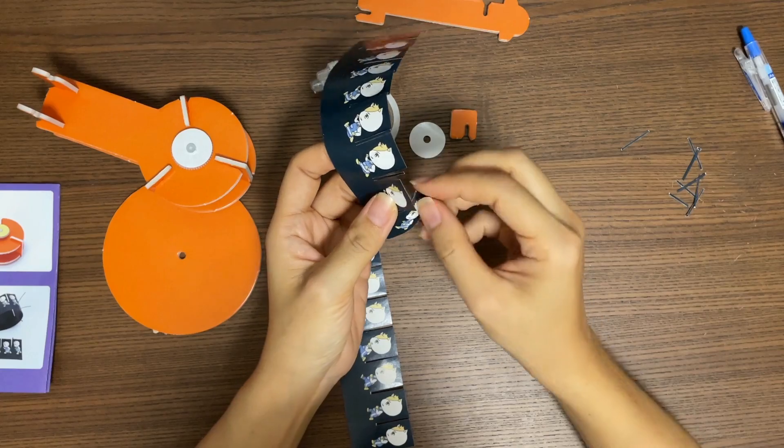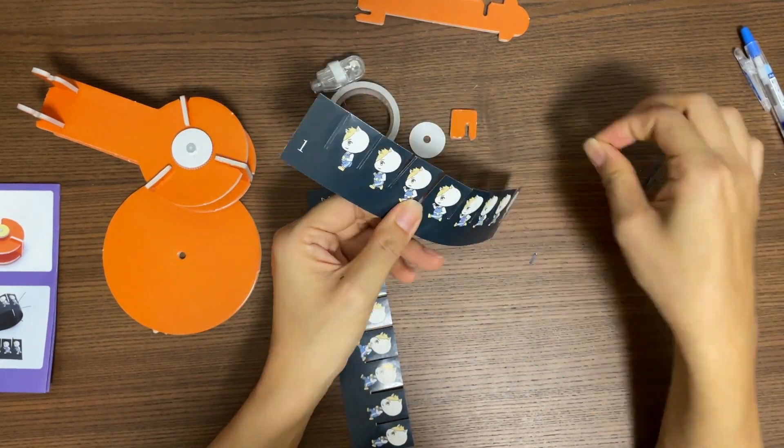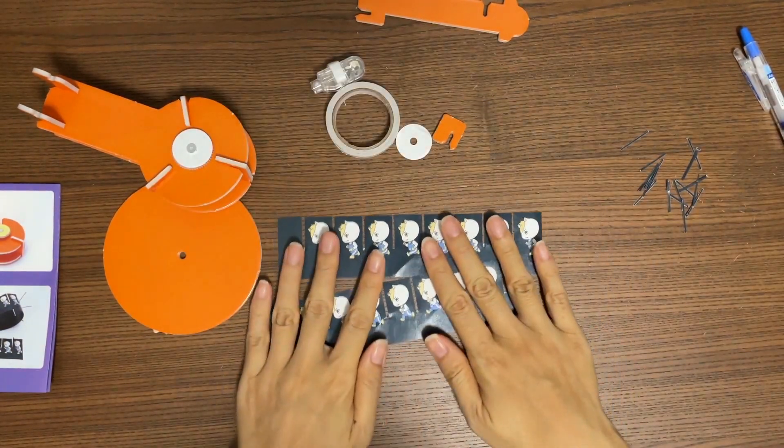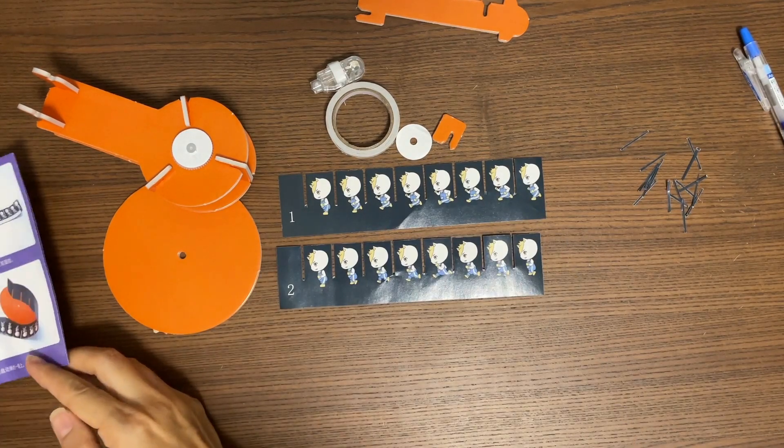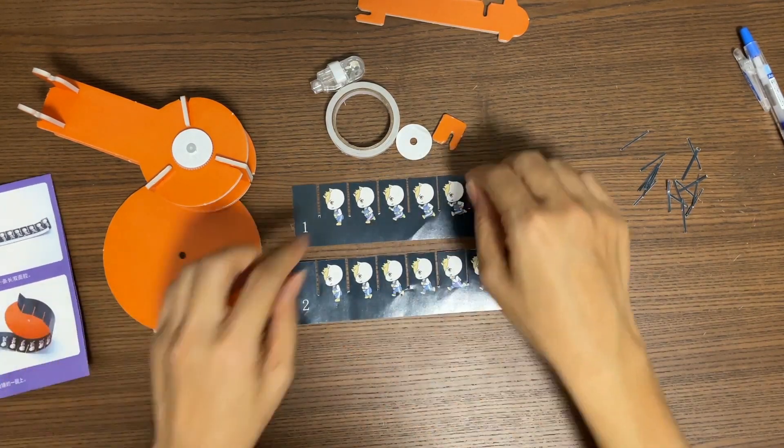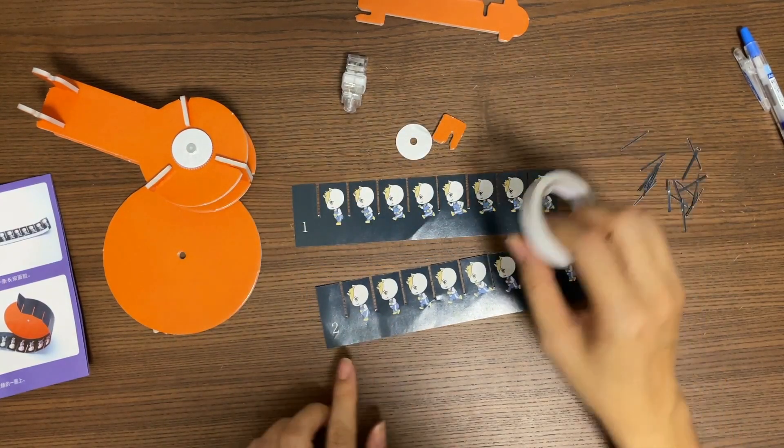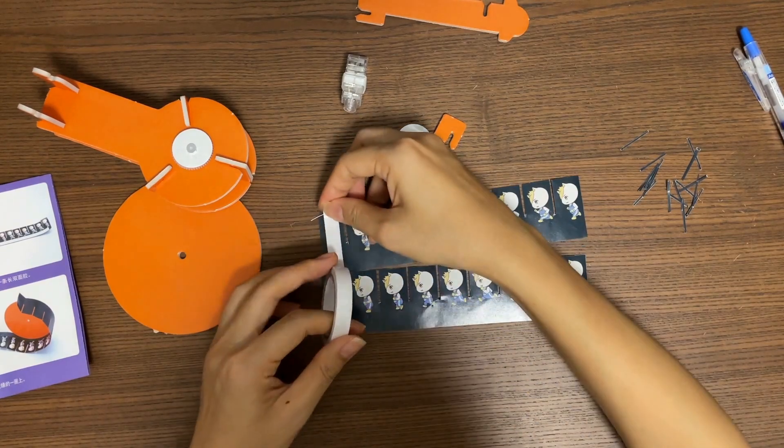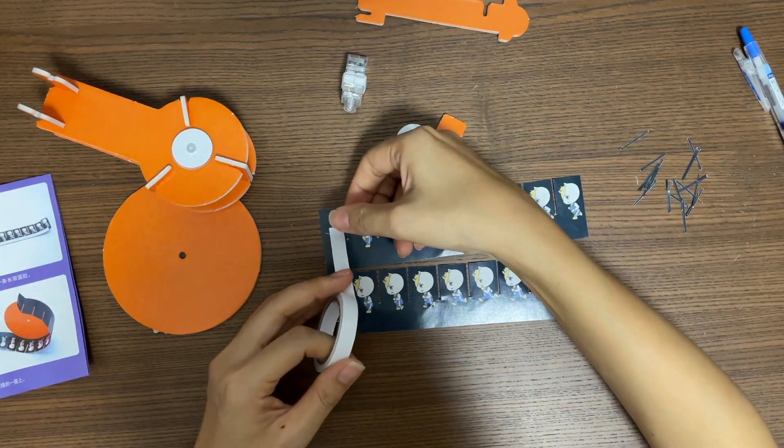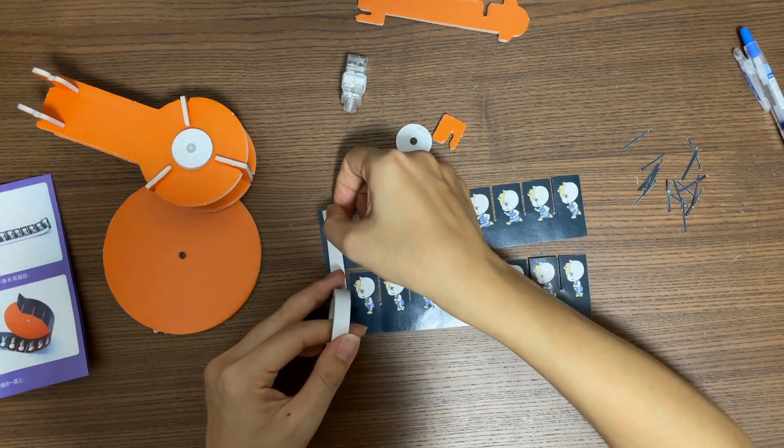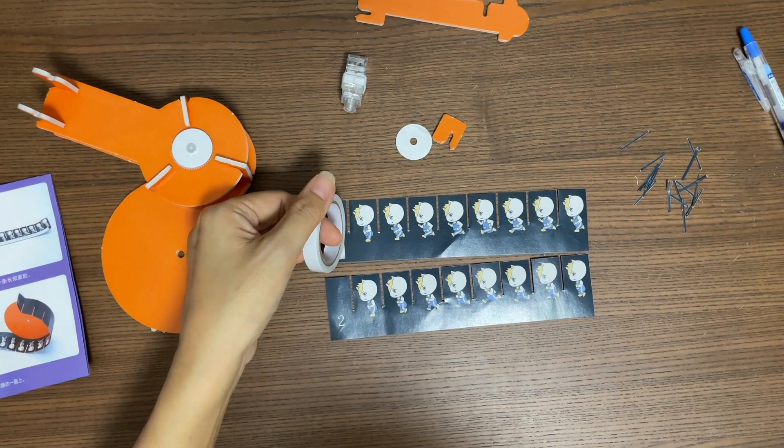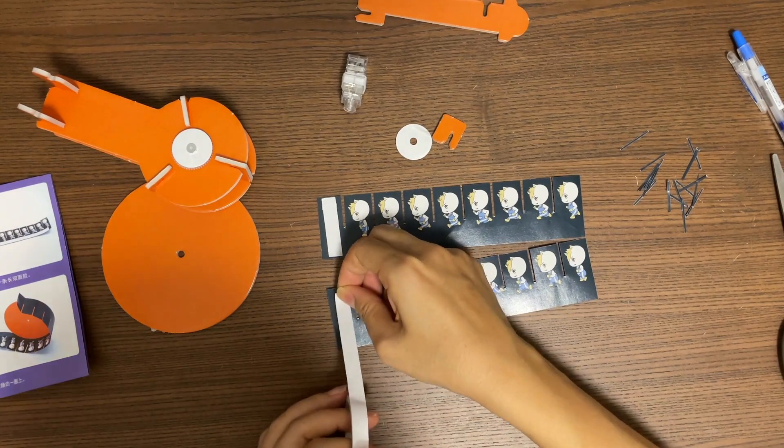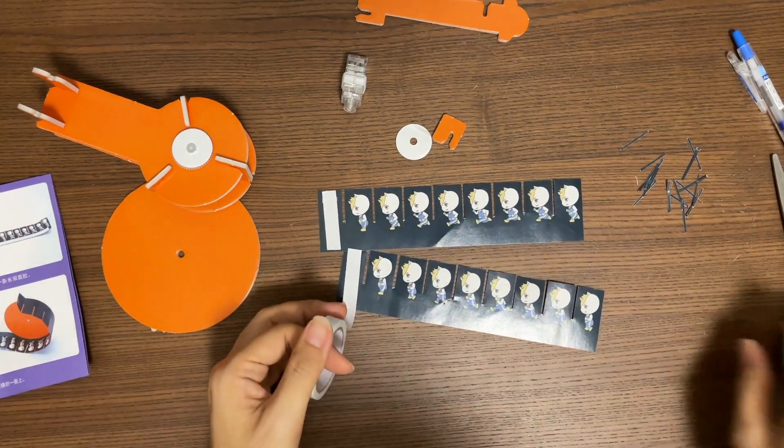Let's do the same for paper one. We have number two and number one here. So let's remove one portion of the double-sided tape and cover this part with number one. Do the same for the paper with number two.